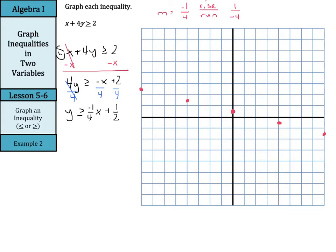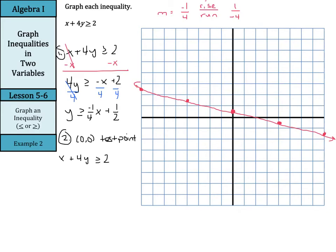Recognize this is an or equal to, so I can actually draw a closed boundary — not the dashed line, but the solid line. For step 2, we're going to use (0, 0) again as our test point, since it doesn't go through the boundary. We'll start again with the original: x plus 4y is greater than or equal to 2. Put in (0, 0): 0 plus 4 times 0 is greater than or equal to 2. Is 0 greater than or equal to 2? No, that is false.